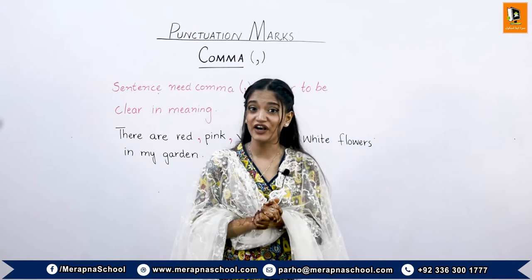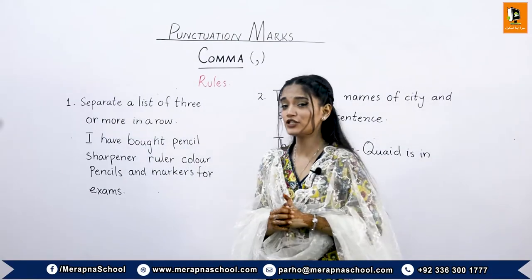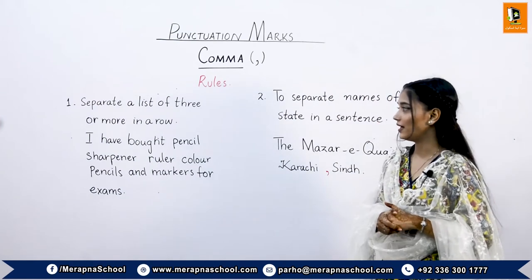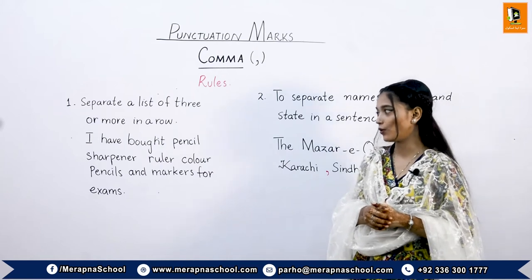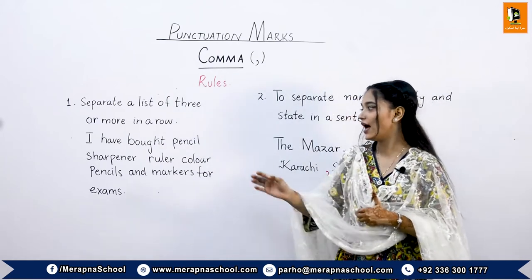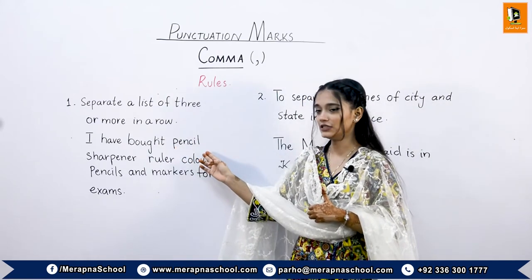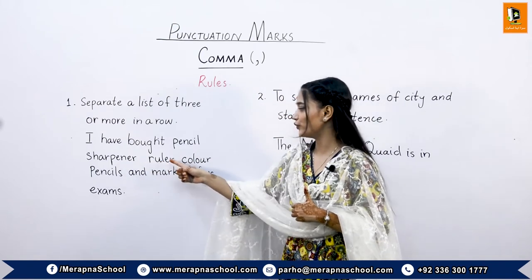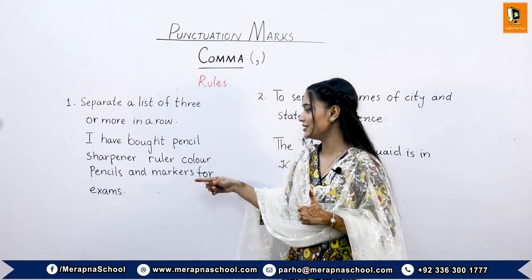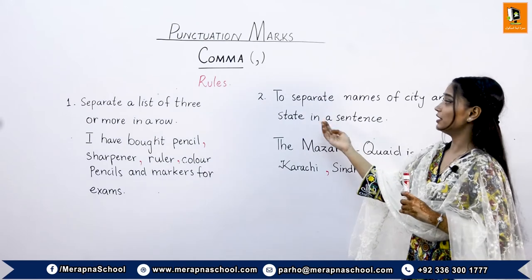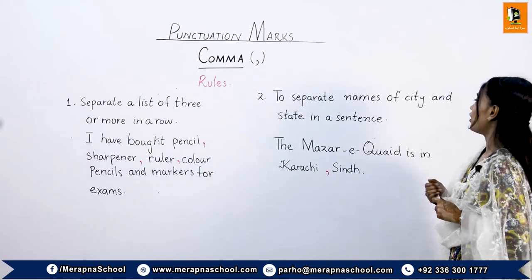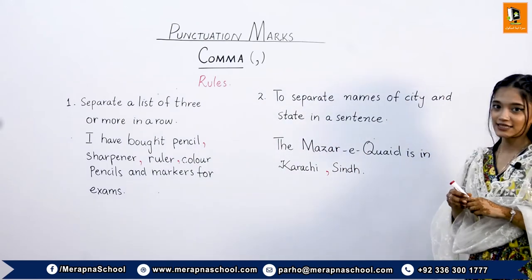There are also rules for how, why, and where we use commas. The first rule is to separate a list of three or more words in a row. For example: 'I have bought pencil, sharpener, ruler, color pencils, and marker for exams.' The second rule is to separate names of city and state in a sentence.